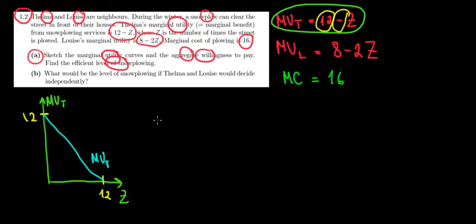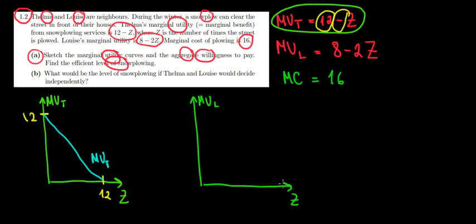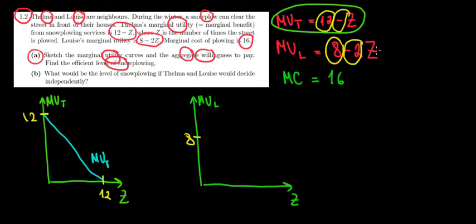Now with the same logic we draw it for Luis. On this axis we have the marginal utility of Luis relative to snowplowing services. Luis's maximum willingness to pay is 8, so we plot 8 on the y-axis. The slope is negative 2, meaning it's steeper, and the maximum snowplowing Luis would want is 4 — that's the x-intercept. Connecting the two gives us the marginal utility of Luis.